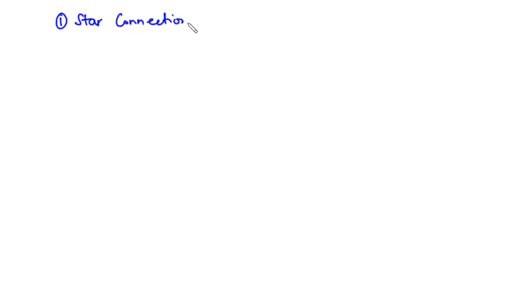Now let's focus on the two modes of connection in a three-phase system. In a three-phase system, we have two modes of connection: the star connection and the delta connection.